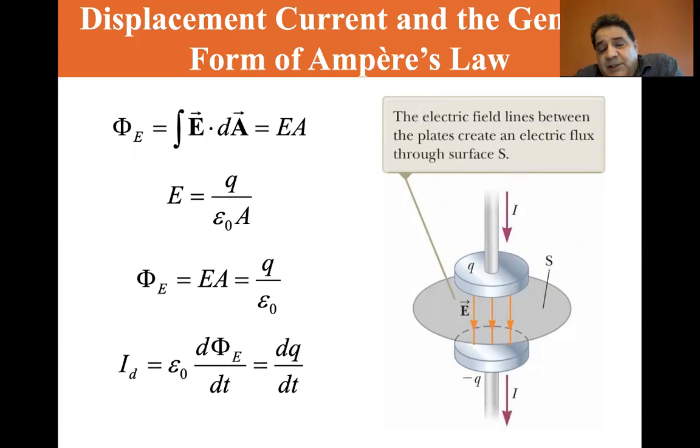So the displacement current is epsilon zero, the permittivity times dΦ/dt. That's equal to the change in current dQ/dt.